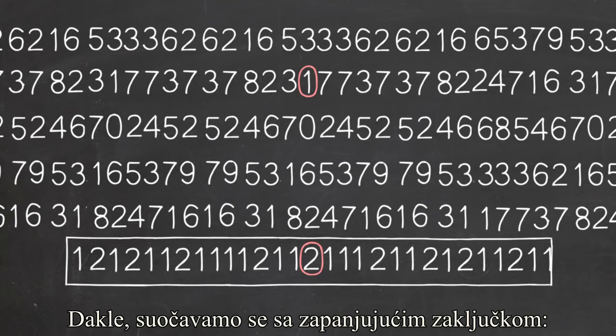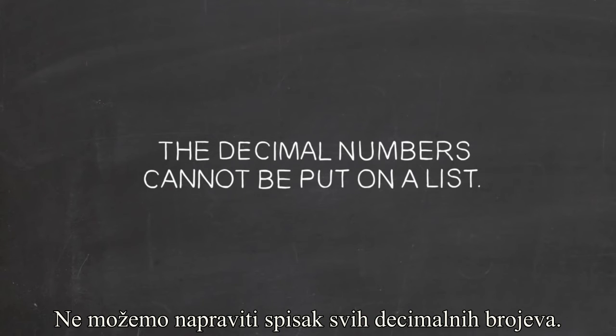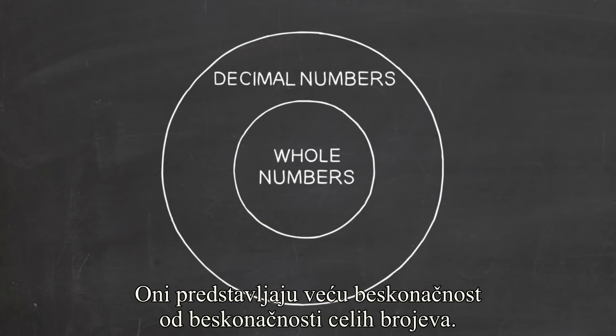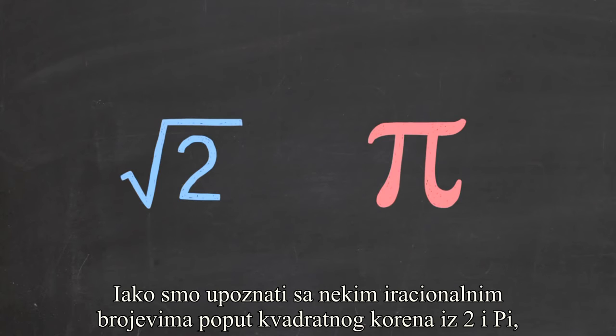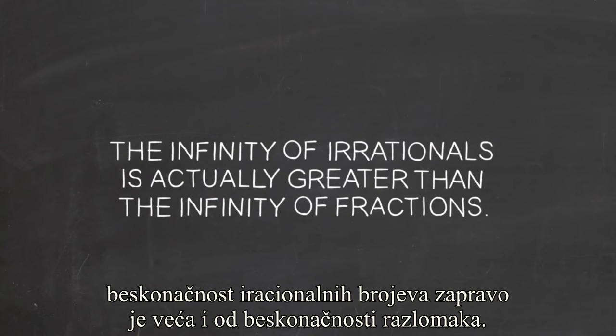So we're faced with this astounding conclusion. The decimal numbers cannot be put on a list. They represent a bigger infinity than the infinity of whole numbers. So even though we're familiar with only a few irrationals, like square root of 2 and pi, the infinity of irrationals is actually greater than the infinity of fractions.